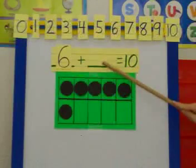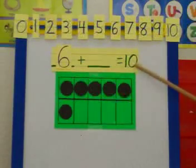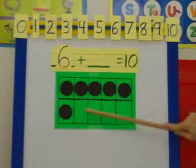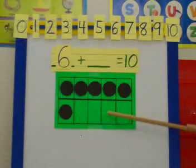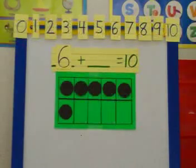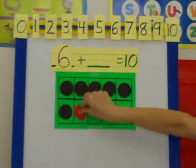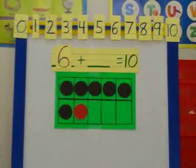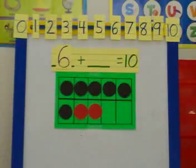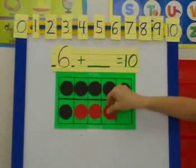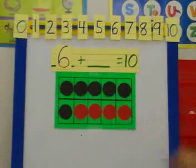I need to find my missing number so I can find out how many more I need to get to that 10. So let's count these empty spots. 1, 2, 3, 4. So we need to fill in with a different color.